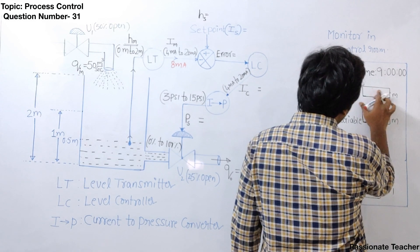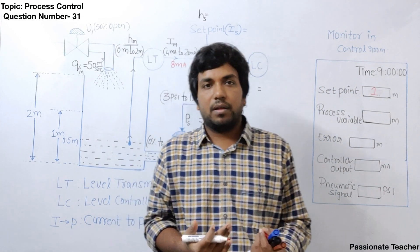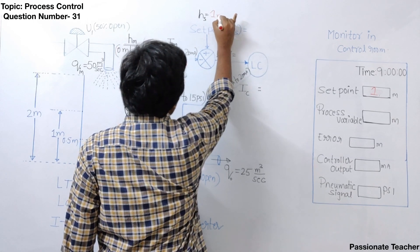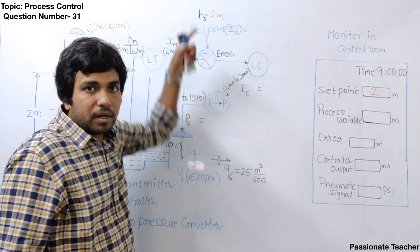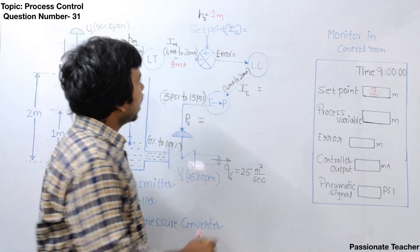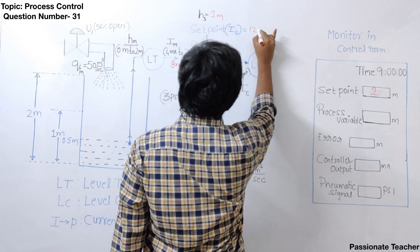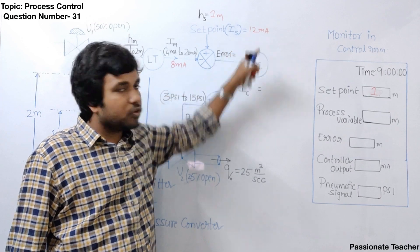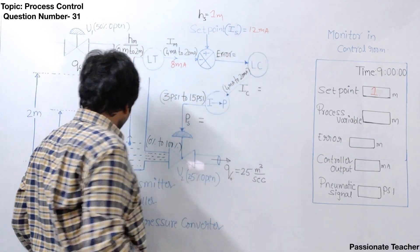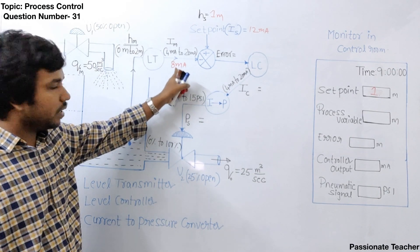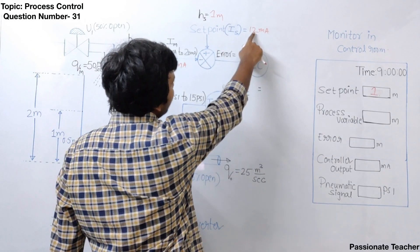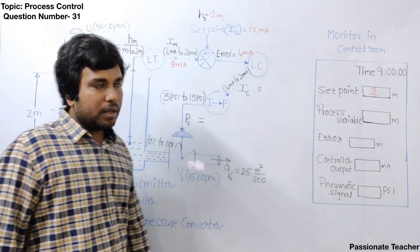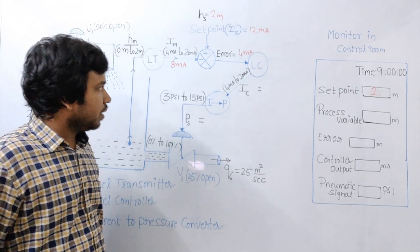If the engineer enters the setpoint as 1 meter, it means the engineer expects the water level to be at 1 meter. At the instrumentation level, this setpoint of 1 meter is automatically converted to a current signal of approximately 12 milliampere. Now we have 0.5 meters of water level calibrated as 8 mA, and the desired setpoint is 12 mA. So the error signal is 12 mA minus 8 mA, which equals 4 milliampere.